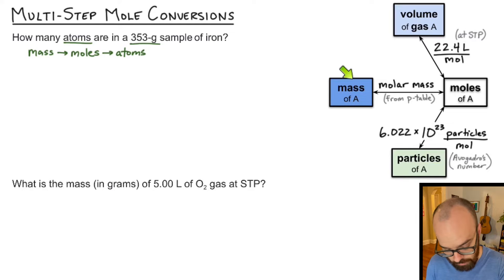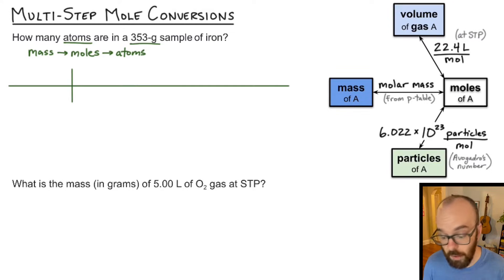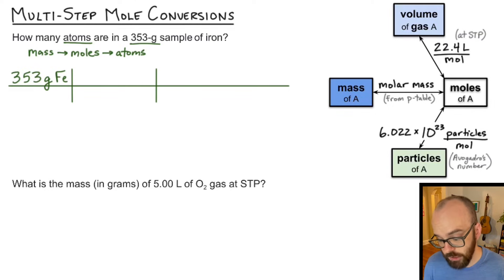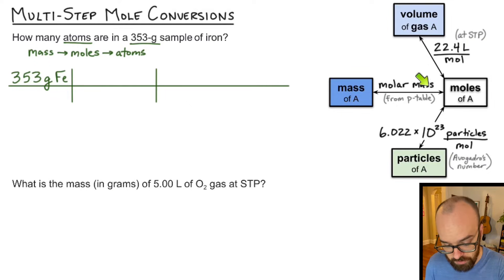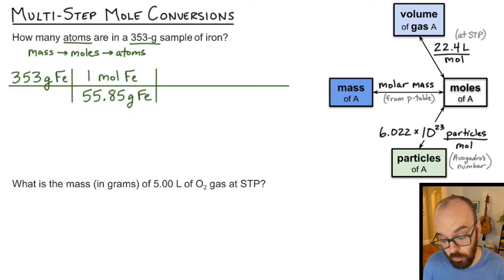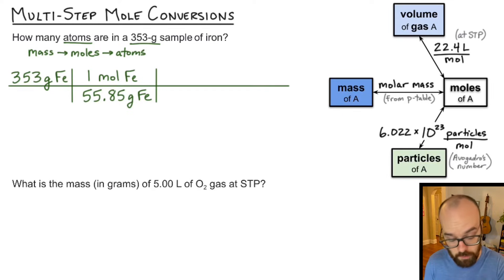That's a total of two conversions: mass to moles, and then moles to particles. So I'm going to need a conversion table with three parts — one for what I start with, and two parts for each conversion I need to make. In the first part I write what I know: 353 grams of iron. My first conversion is from mass to moles using the molar mass of iron, which is 55.85 grams of iron per mole of iron. I put grams of iron in the denominator so it divides out with the grams in the numerator, leaving me with moles.